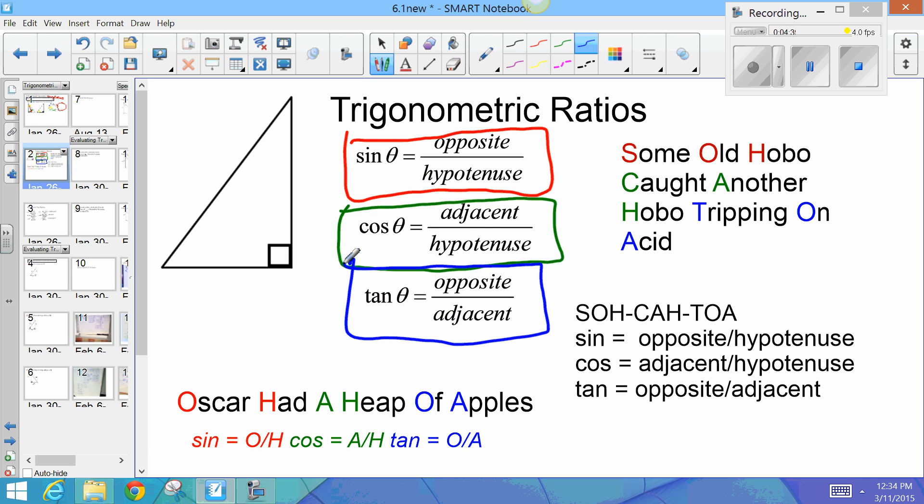Now, the other stuff that I have on the screen here are some very popular ways of memorizing. There's SOH-CAH-TOA. Sine is opposite over hypotenuse. Cosine is adjacent over hypotenuse. Tangent is opposite over adjacent. That's the one that is the most prevalent. You see that. A lot of people like to use it. I hate that one. Because how in the world am I supposed to know how to spell SOH-CAH-TOA? If I don't know how to spell SOH-CAH-TOA, it doesn't do me any good.